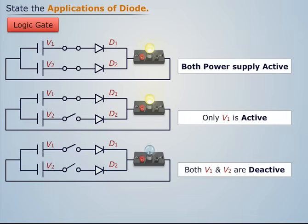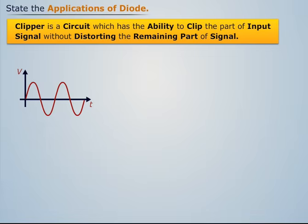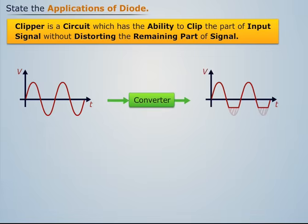Clipper is a circuit which has the ability to clip part of the input signal without distorting the remaining part of the signal.